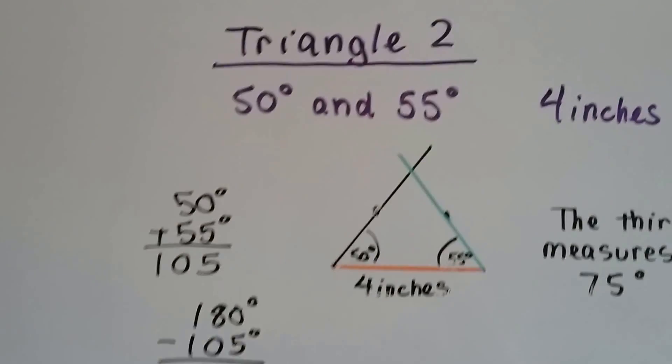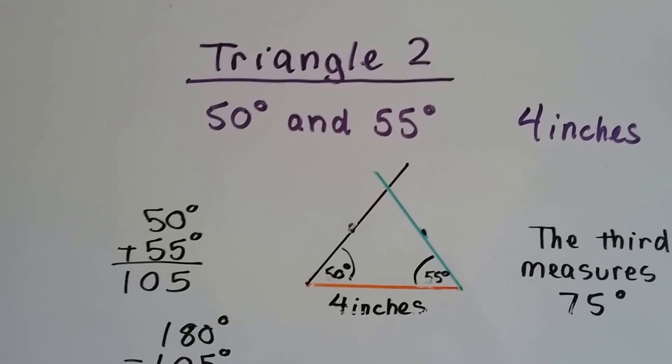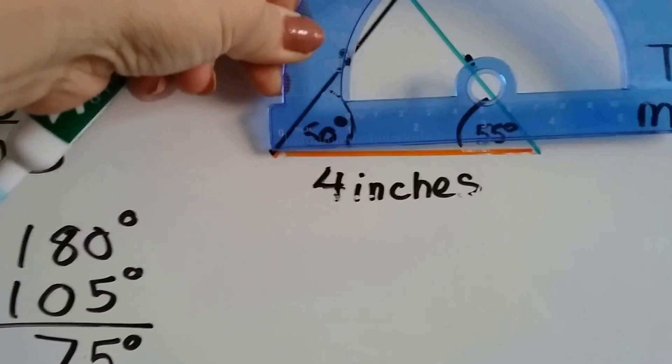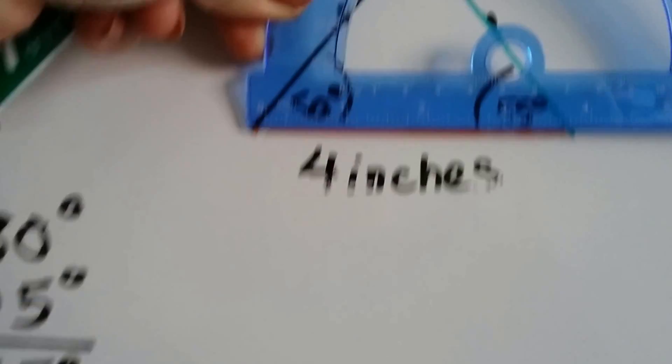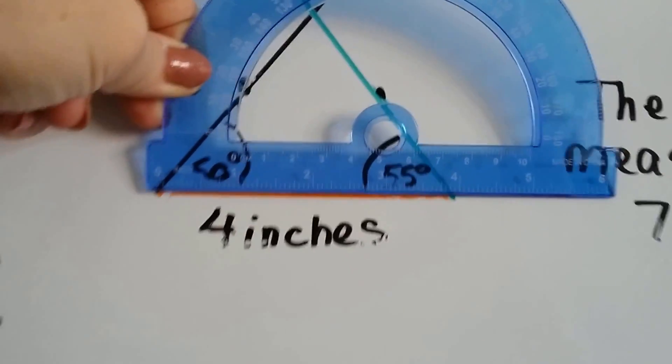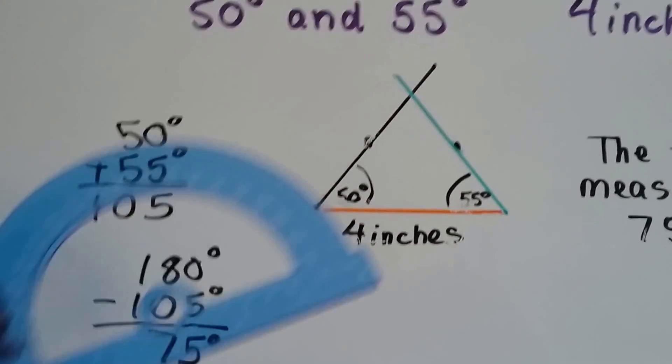So let's take a look at this one. We've got a 50 degree angle and a 55 degree angle with a 4 inch base. So the first thing we do is draw our 4 inch base. Can you see? That's 4 inches right there.